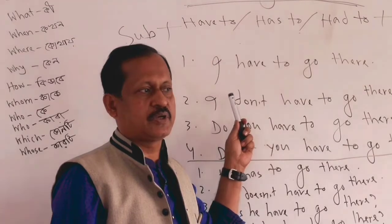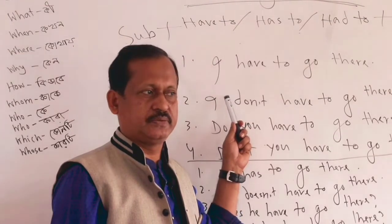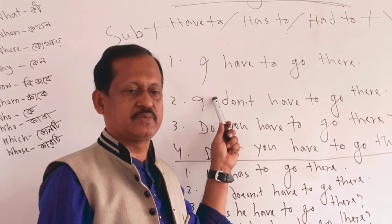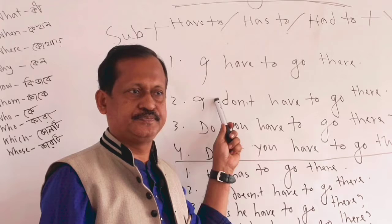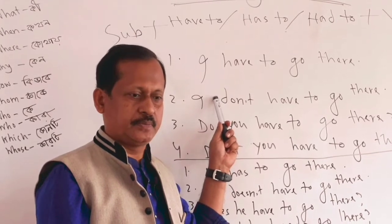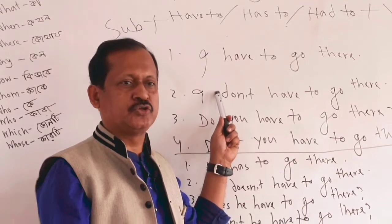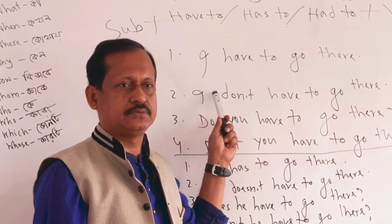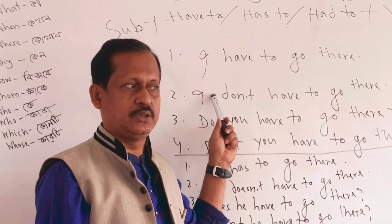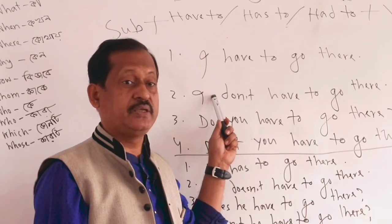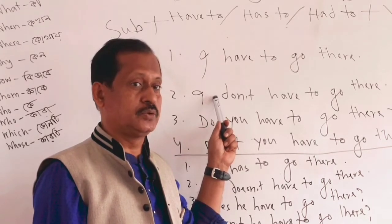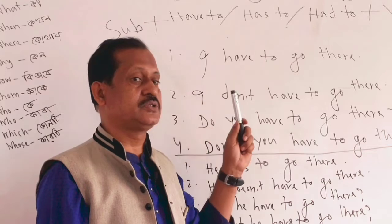For example, going to the office, school, or college — places where a person is bound to go, where it is very necessary to go. The way we express such sentences in English falls under the lesson called obligation.